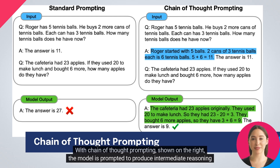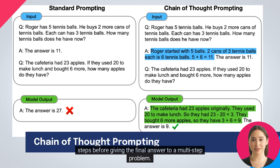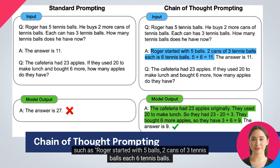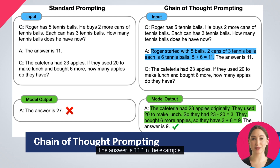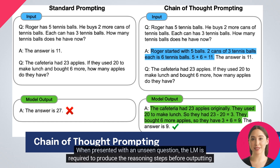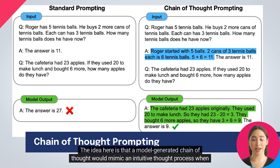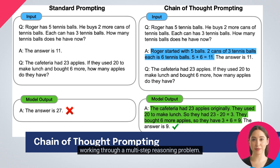With chain-of-thought prompting, shown on the right, the model is prompted to produce intermediate reasoning steps before giving the final answer to a multi-step problem. This is achieved by expanding the examples in the prompt to contain the detailed reasoning process — such as: Roger started with five balls, two cans of three tennis balls each equals six tennis balls, the answer is 11. When presented with an unseen question, the LM is required to produce the reasoning steps before outputting the final answer. The idea is that a model-generated chain-of-thought would mimic an intuitive thought process when working through a multi-step reasoning problem.